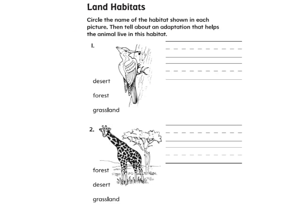Circle the name of the habitat shown in each picture and tell about an adaptation that helps the animal live in that habitat. Where would this bird live — in a water habitat, a desert, a forest, or a grassland? What adaptation does it have that helps it survive? Here we have a big giraffe — does it live in a forest, a desert, or a grassland? What adaptation does it have and how does its adaptation help it?